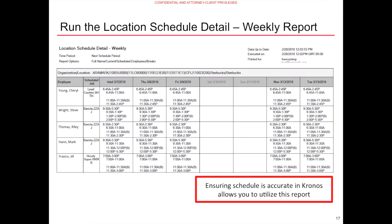Ensuring that your schedule is accurate and up-to-date in Kronos allows you to utilize the Location Schedule Detail Weekly Report. This report displays employees' schedules for a selected period of time, including their home location, department, job, and hours to be worked. The Location Execution Team should select their profit center or desired location to run, print, and post the Location Schedule Detail Report one week prior to the start of the scheduled workweek. Once posted, be sure to incorporate any last-minute changes in the Kronos scheduler and post a final schedule no later than two days prior to the start of the schedule week.